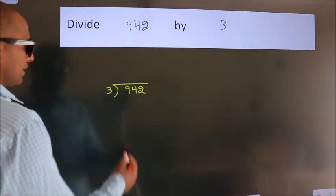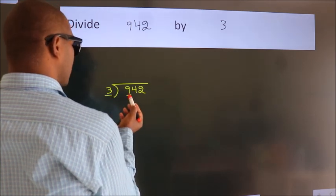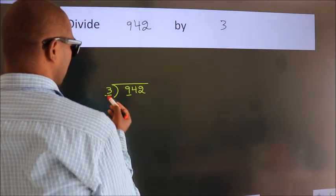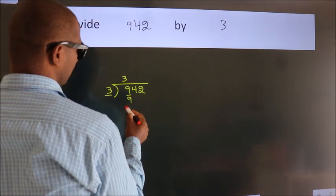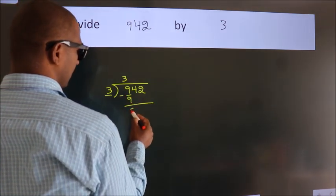Next. Here we have 9 and here 3. When do we get 9? In the 3 table. 3 times 3 is 9. Now we should subtract. We get 0.